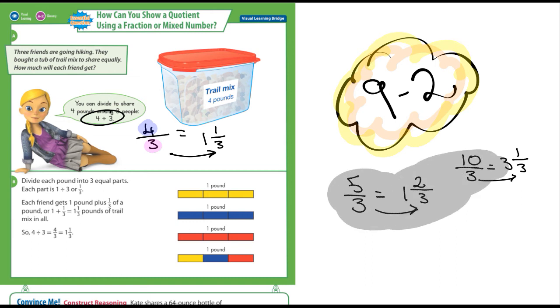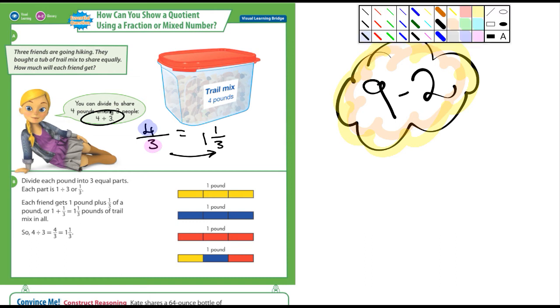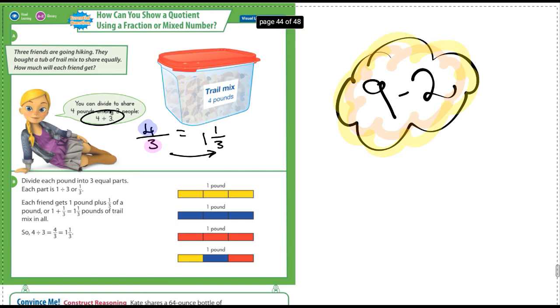Let me erase these here. Let's look at their example some more. So it says, divide each pound into three equal parts. This is what I'm looking at. Each part is one divided by three, or one-third. I mean, that's one way you could look at it. And each friend gets one pound plus one-third of a pound. So four divided by three is equal to four over three, which is equal to one and one-third. All right, let's move down a little bit here. Let's look at the Convince Me.